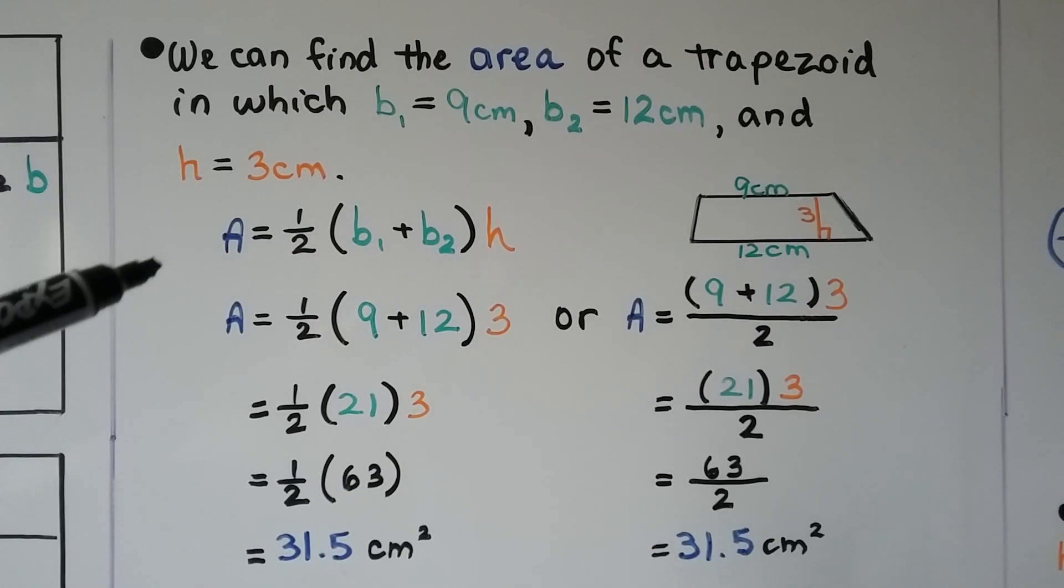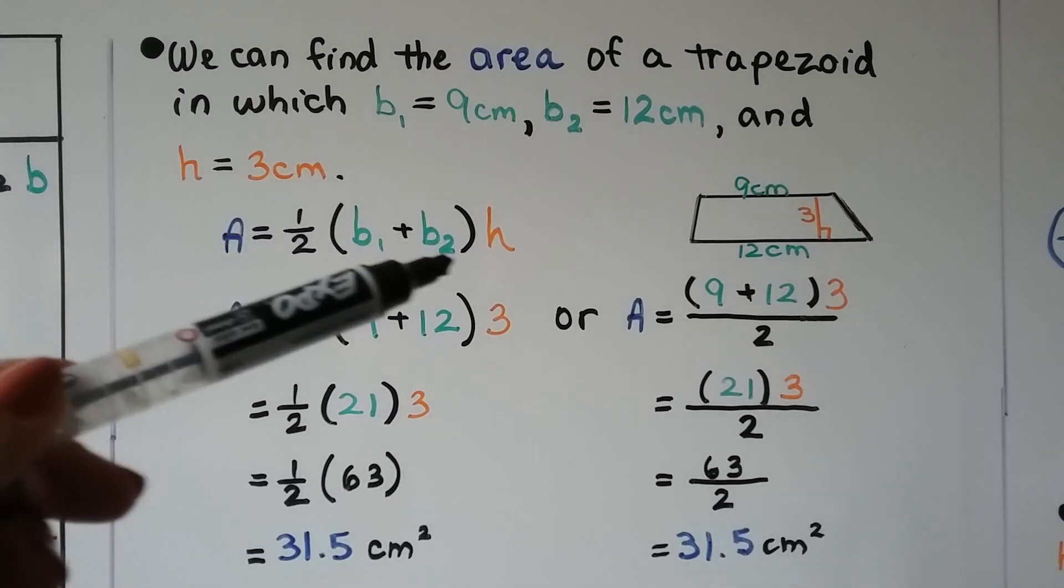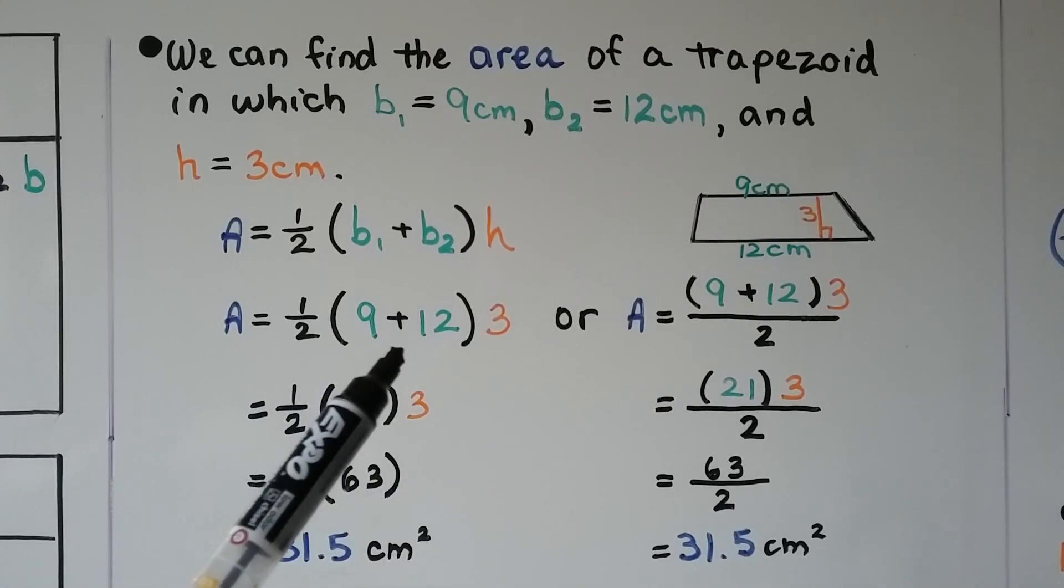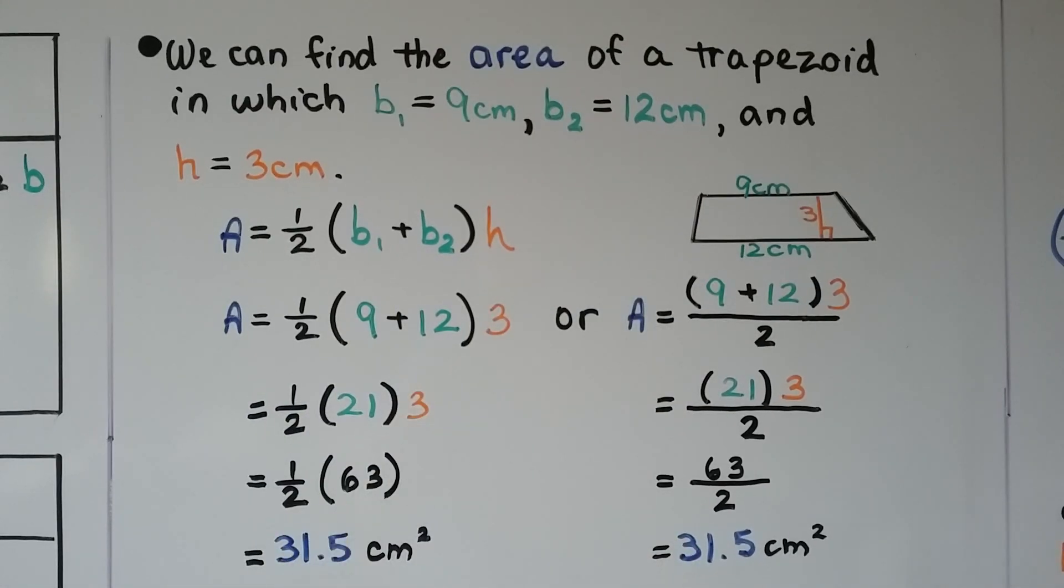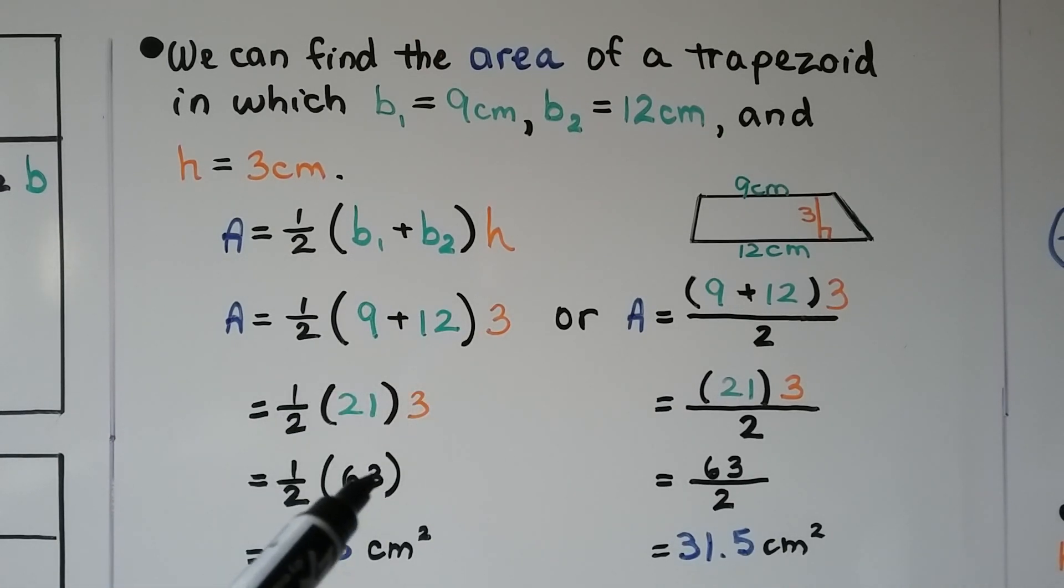Using the formula for the trapezoid, the area is equal to half times base sub 1 plus base sub 2 times the height. So base sub 1 is a 9, base sub 2 is a 12, we're going to multiply it by 3. 9 plus 12 is 21 times 3 is a 63. We times that by a half and we get 31.5 centimeters squared.